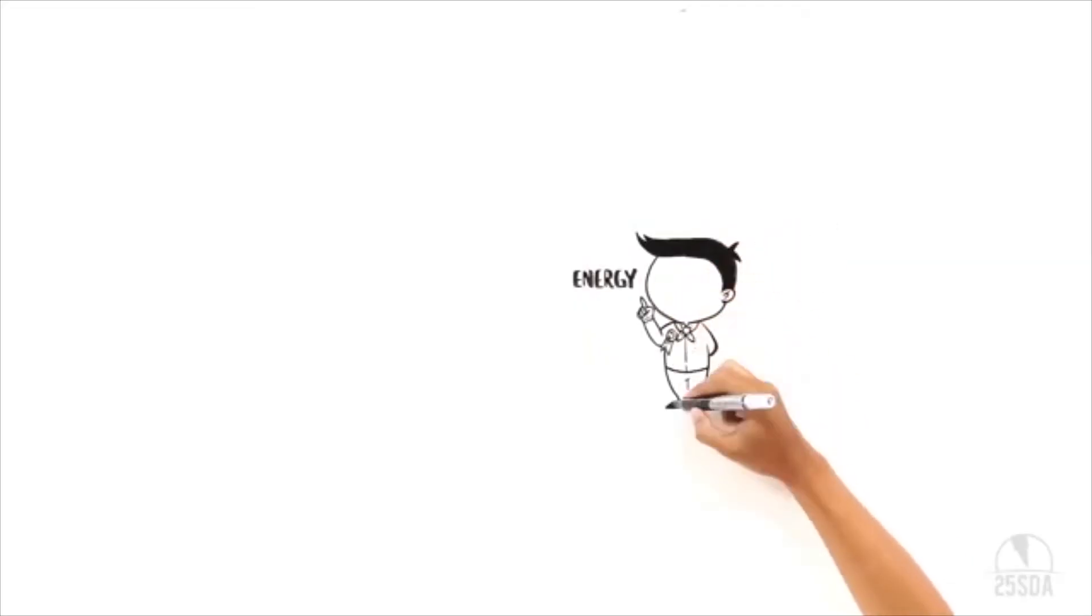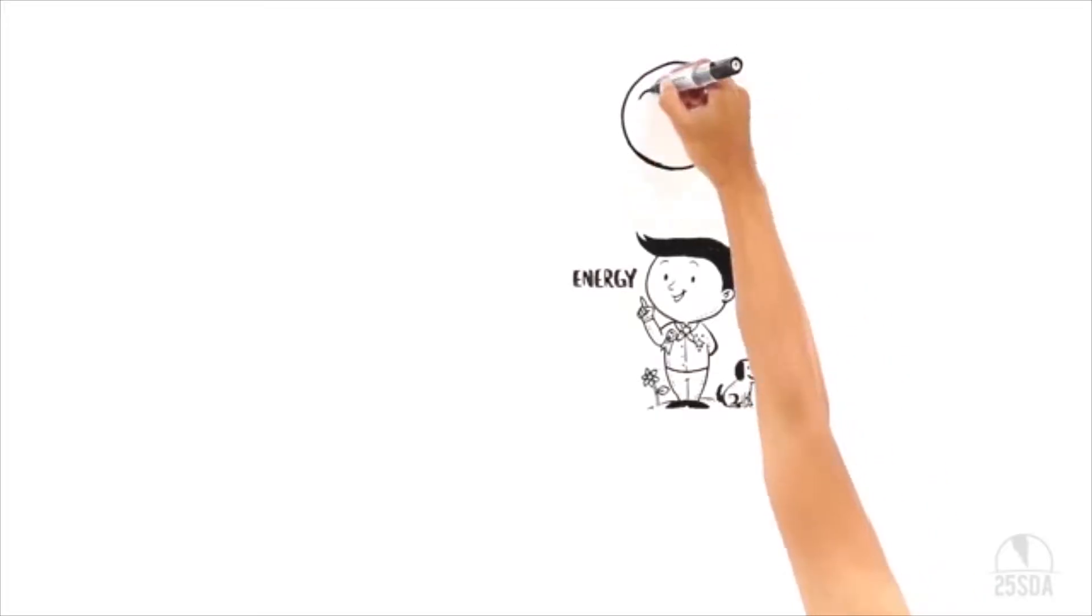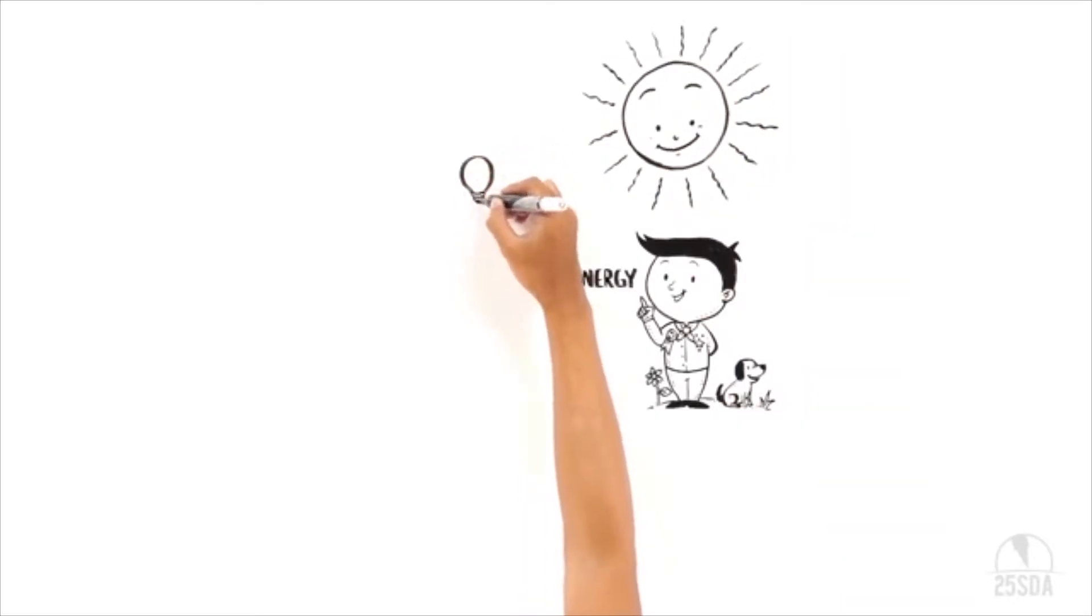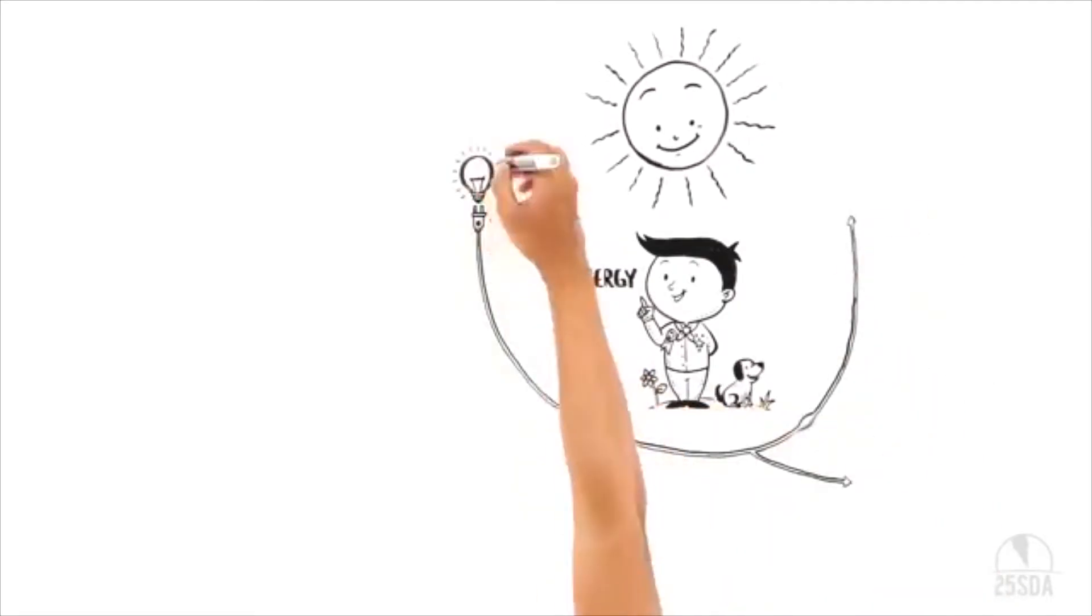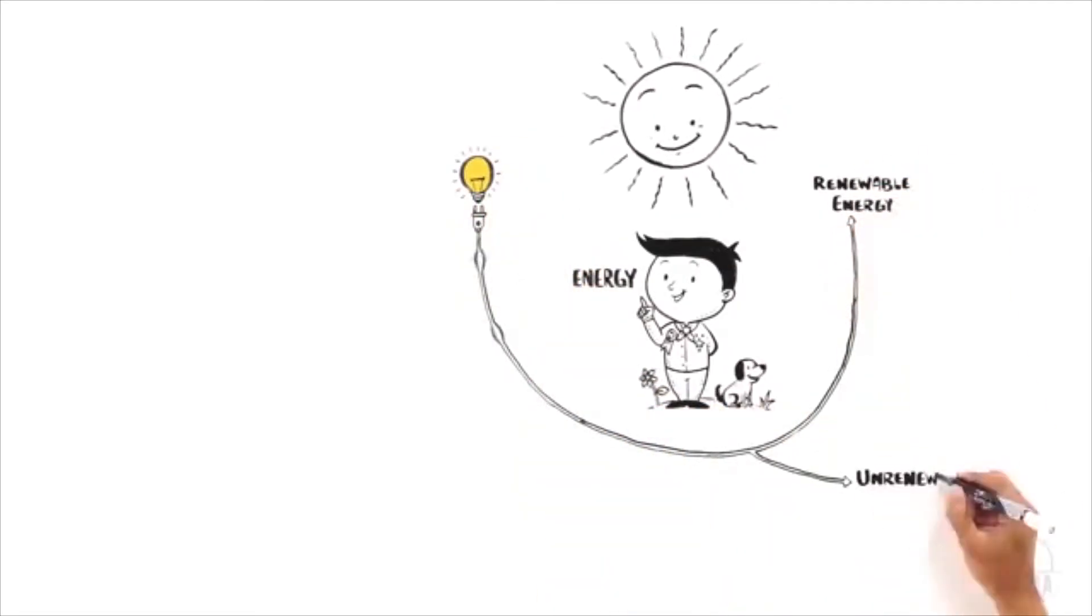Energy - without it, absolutely nothing would happen. The sun gives us two kinds of energy: light energy and heat energy. At night, electrical energy powers our light bulbs and appliances. There are two kinds of energies: renewable energy and non-renewable energy.